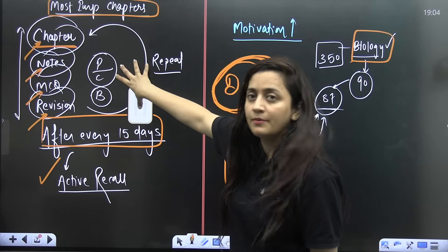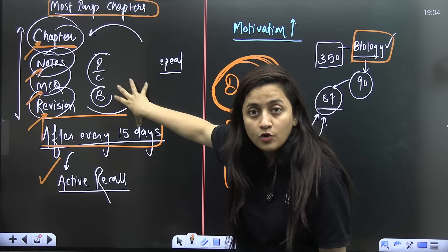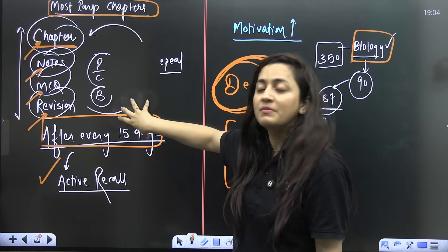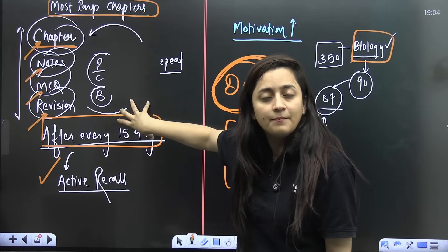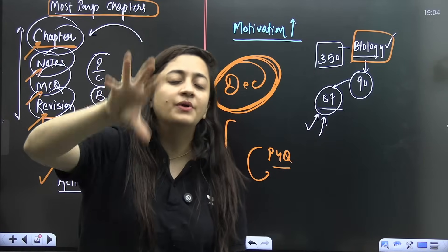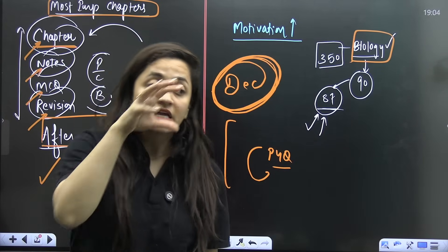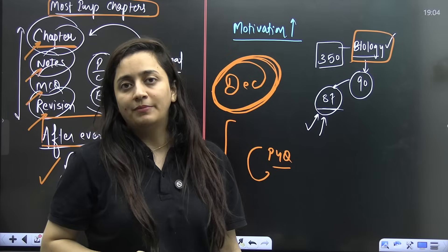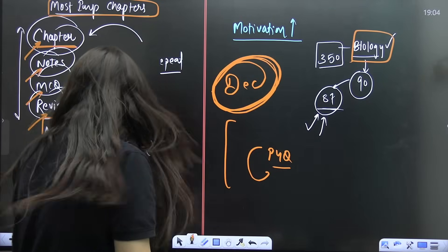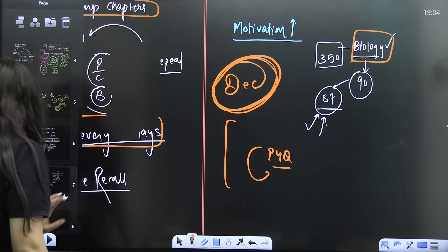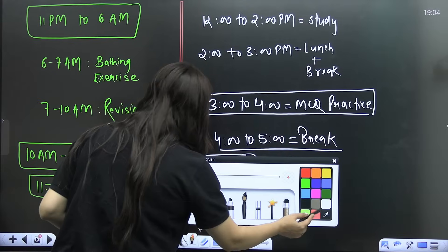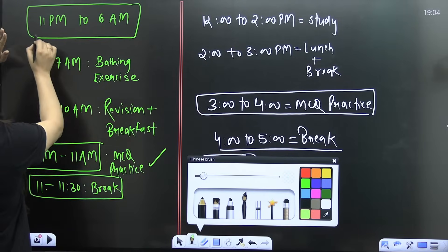For physics and chemistry, go for the detailed one-shot. Complete your main chapters by December, and in January and February keep that time for revision and other chapters. Divide your time equally.